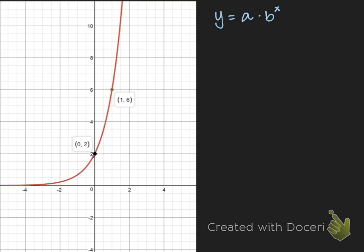So once again, a is going to represent our initial value, and b is going to represent our multiplier.